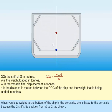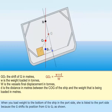When you load weight to the bottom of the ship in the port side, she is listed to the port side because the G shifts its position from G to G1 as shown.